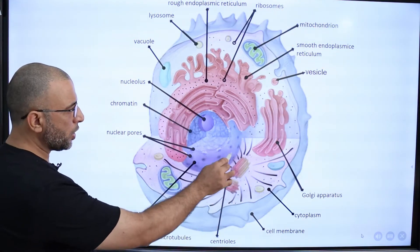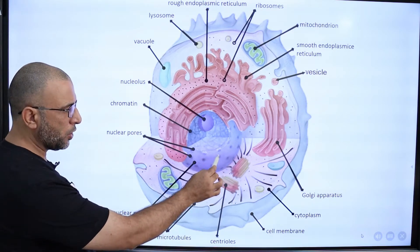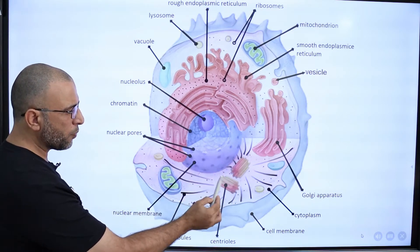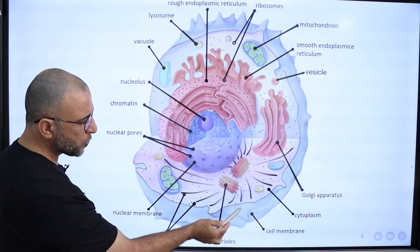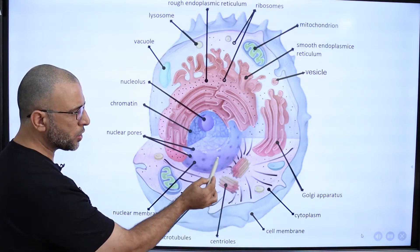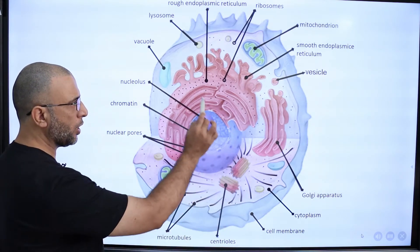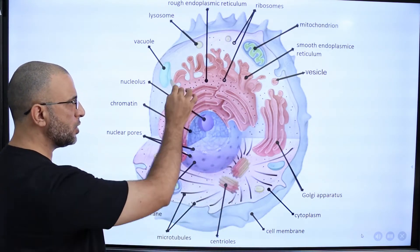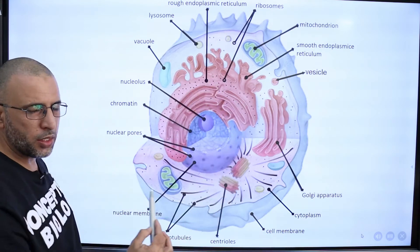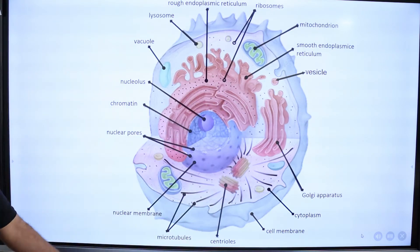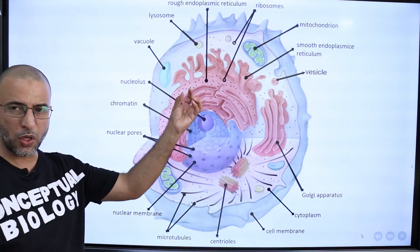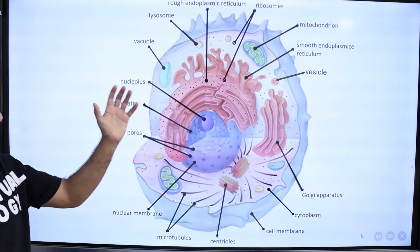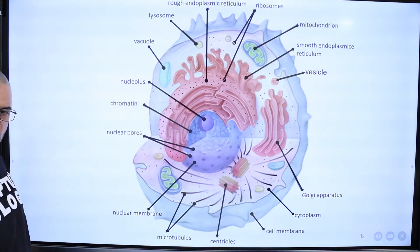Here is the nucleus, bounded by a double nuclear membrane, and here is the cell membrane. Inside the cell membrane and outside the nuclear membrane, all the contents present there are called cytoplasm. Cytoplasm contains cytoplasmic organelles, which are little organs, and certain other structures.